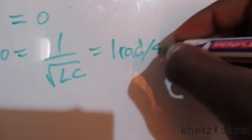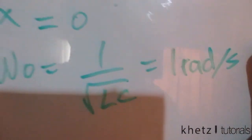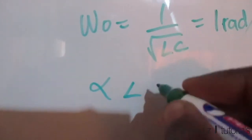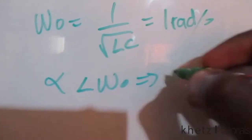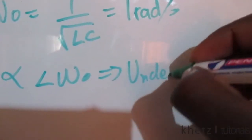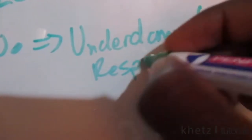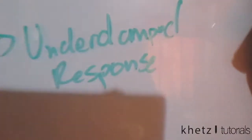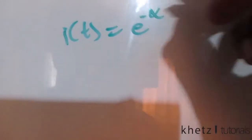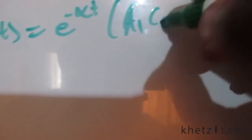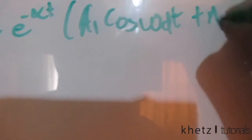The resonant frequency ω₀ is 1 radian per second. The damping factor is less than the resonant frequency, which implies that we have an underdamped response. Now that we have an underdamped response, we know the general formula: i(t) = e^(−αt) × [A1·cos(ωd·t) + A2·sin(ωd·t)].